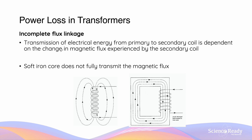The induction of current in the secondary coil is due to changes in magnetic flux produced by the current in the primary coil. Although the iron core improves the transmission of magnetic flux between the two sets of coils, some amount of flux is not transmitted. The flux that goes away from the secondary coil is usually not carried by the iron core, and due to this incomplete flux linkage, not all of the electrical energy in the primary coil is transferred to the secondary coil.